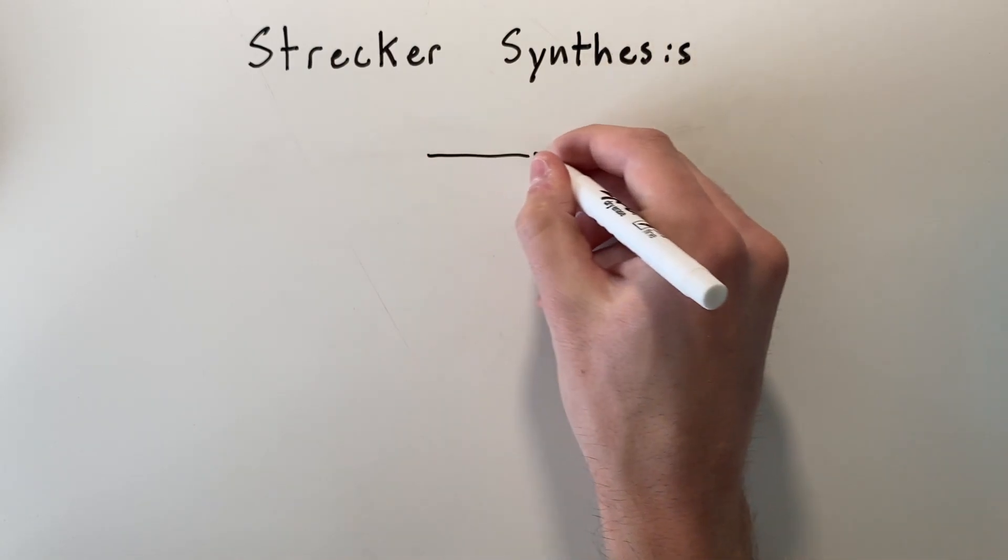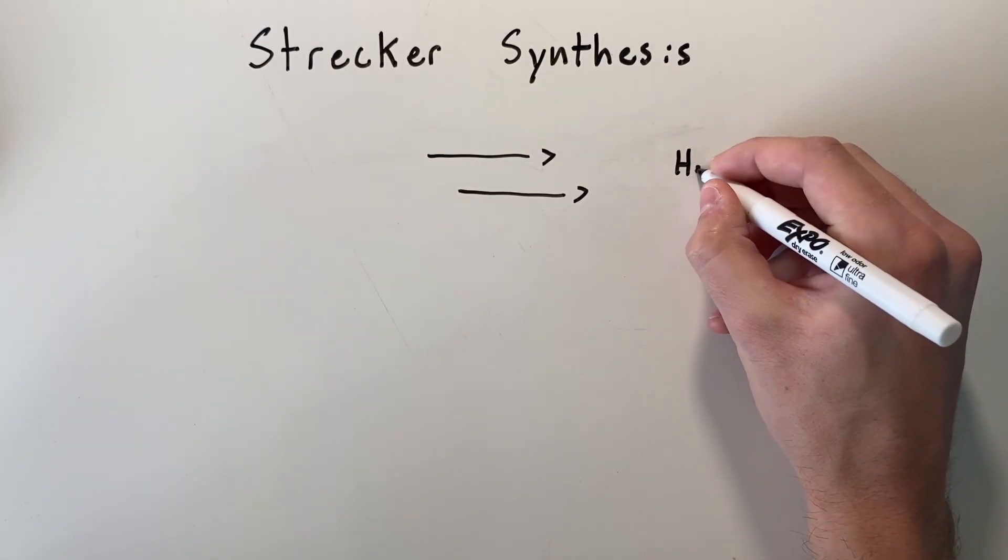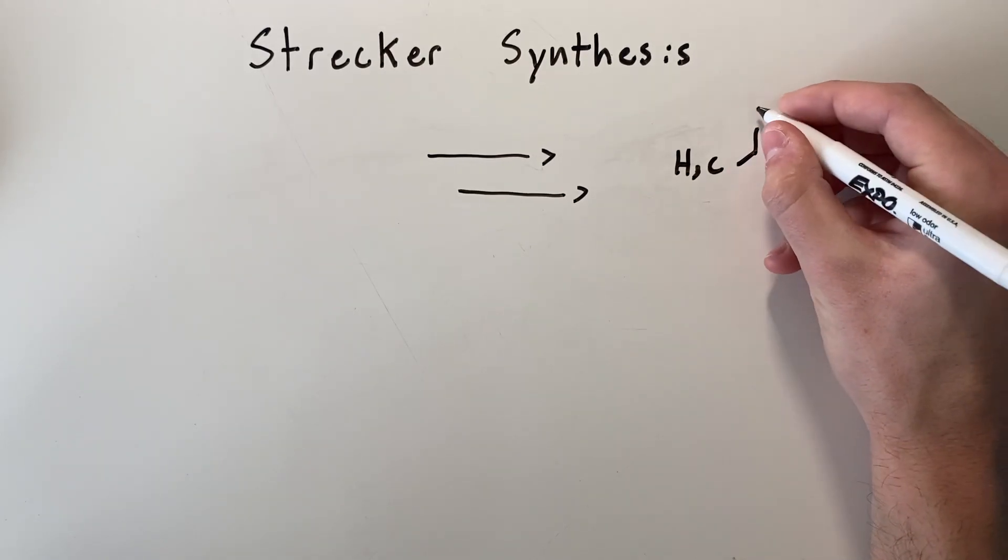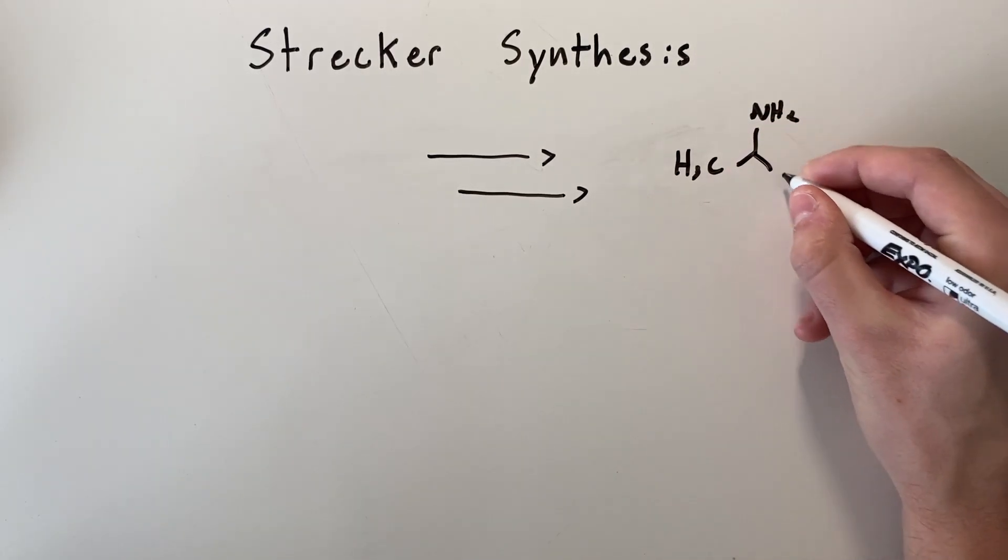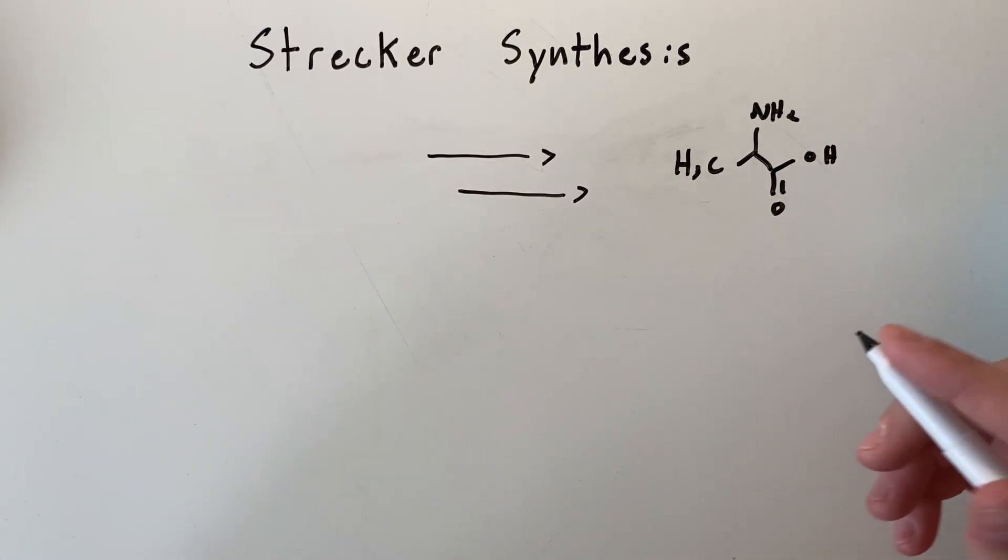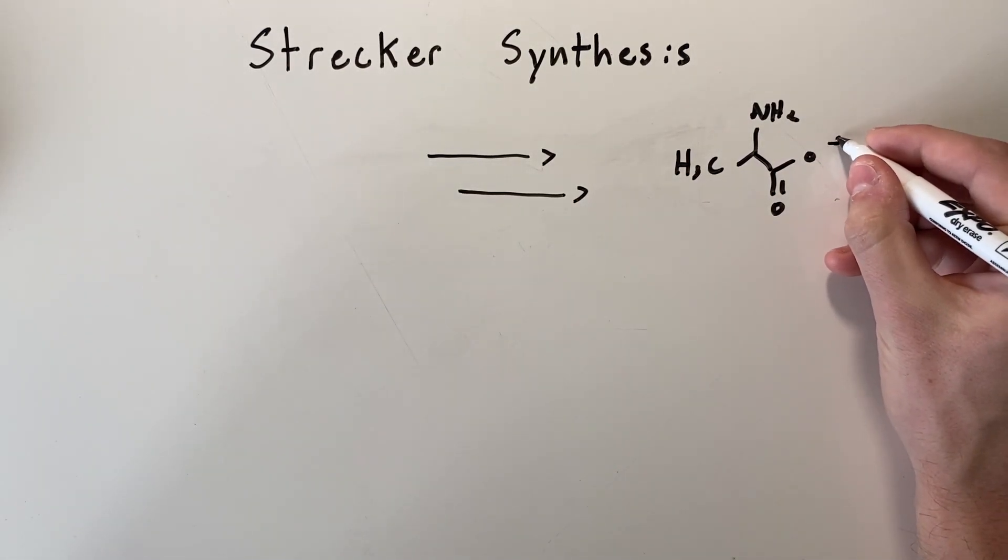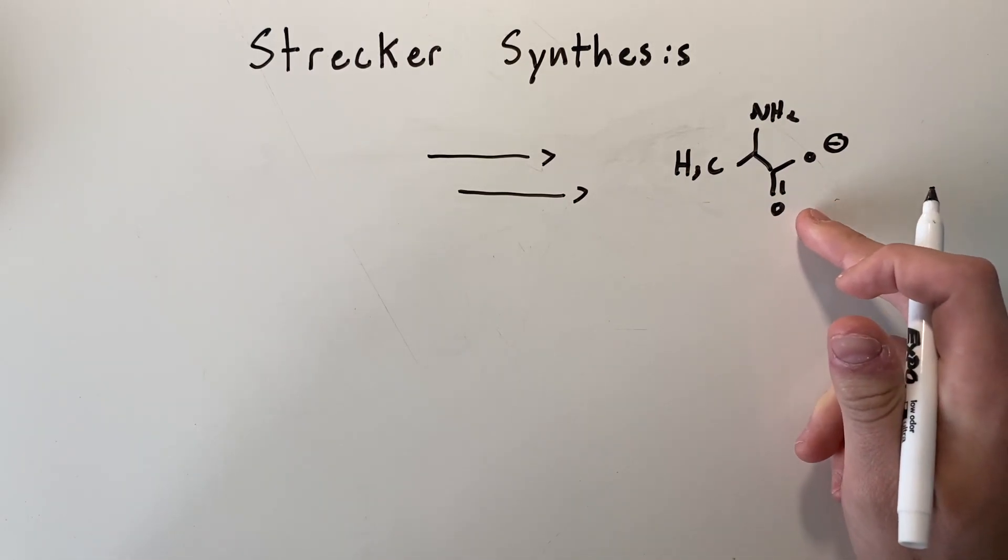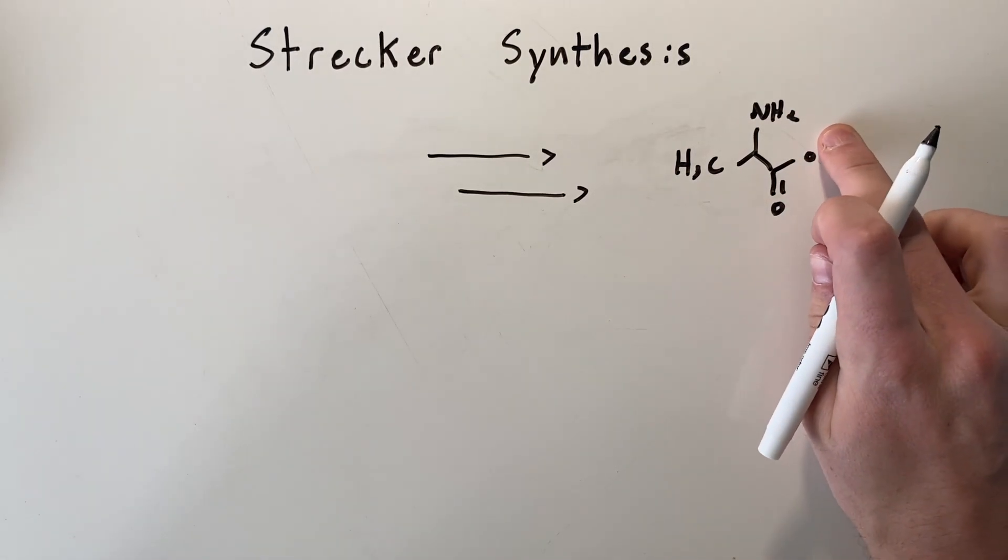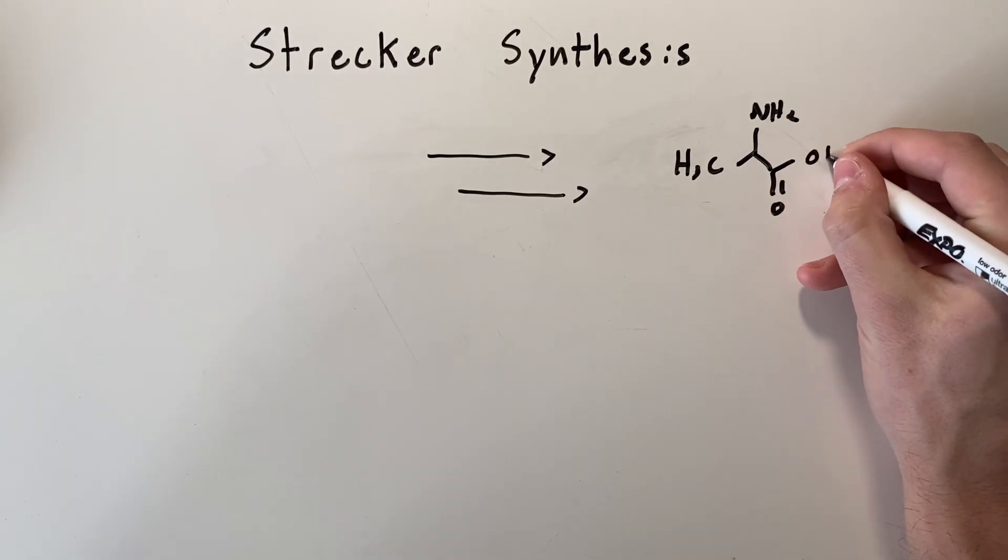So let's say we wanted to synthesize alanine, which is the second most simple amino acid there is. I should note that amino acids can be protonated or deprotonated depending on the pH of solution. So in a certain environment, like in your cells for example, this carboxylic acid group might be deprotonated, and the same goes for the amino group here. But for our purposes, I'll just write it out in its neutral form.